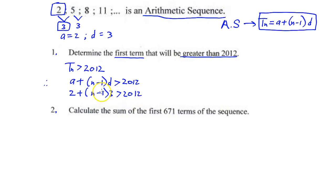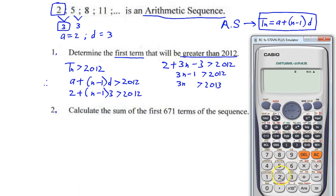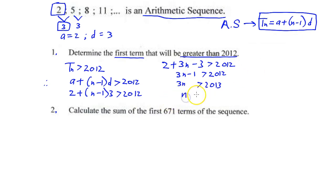Now we are just solving a linear inequality. Opening the brackets: 2 + 3n − 3 > 2012. Since 2 minus 3 is minus 1, we get 3n − 1 > 2012, so 3n > 2013.